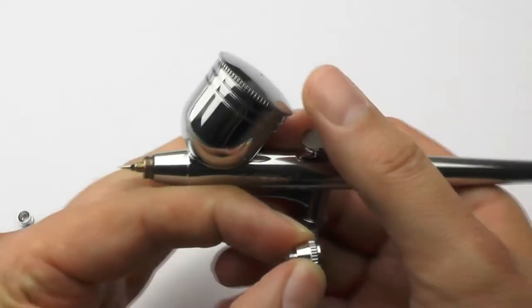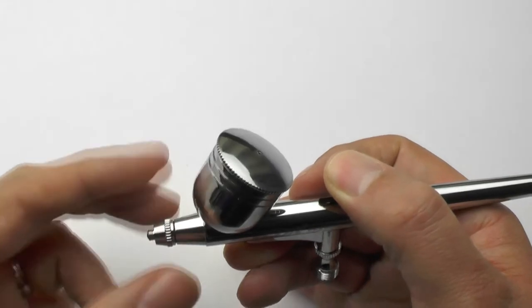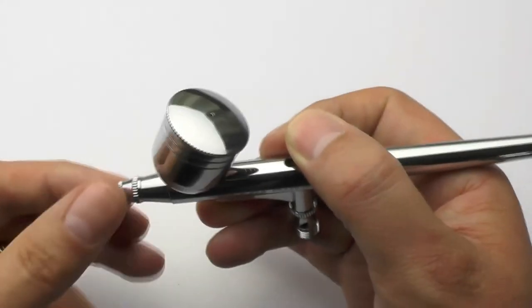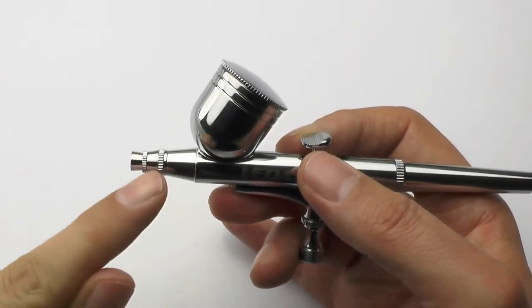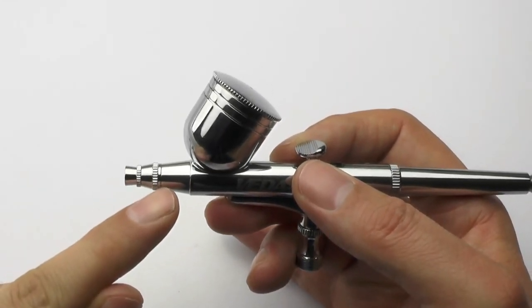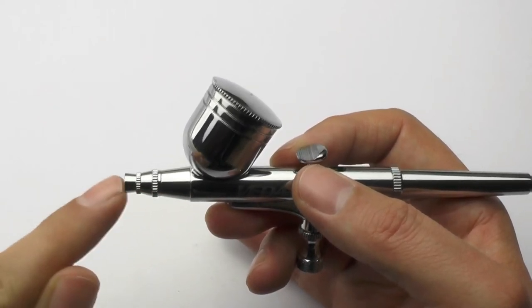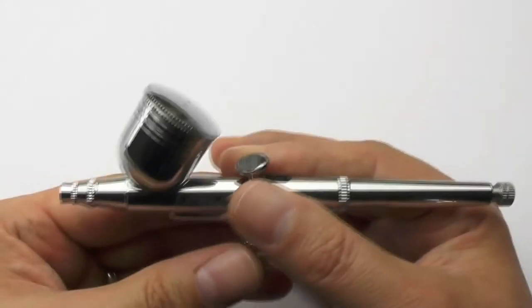The needle cap just protects the end of the needle from any damage or knocks whilst in use. The nozzle cap has a hole through the center and the paint gets atomized within this section and sent out through that aperture there. A lot of the airbrushes come with various sized needles, nozzles, nozzle caps, generally speaking 0.2, 0.3, 0.5 mm. The needle cap is a one size fits all.